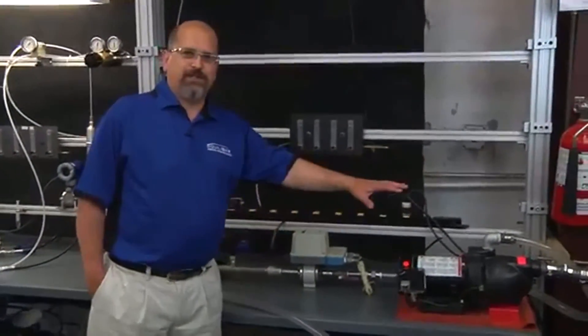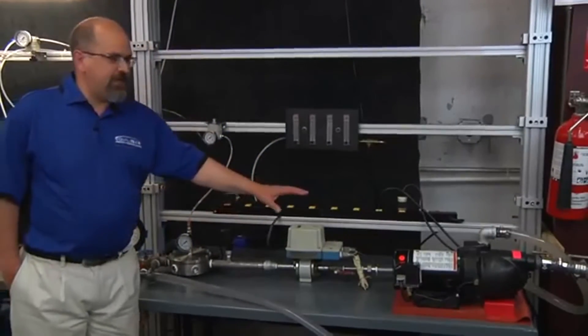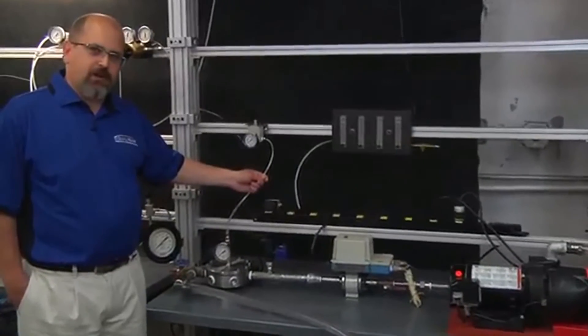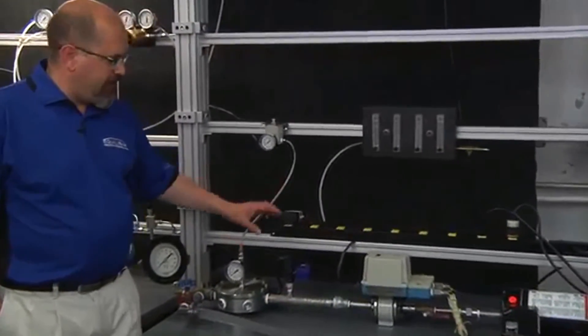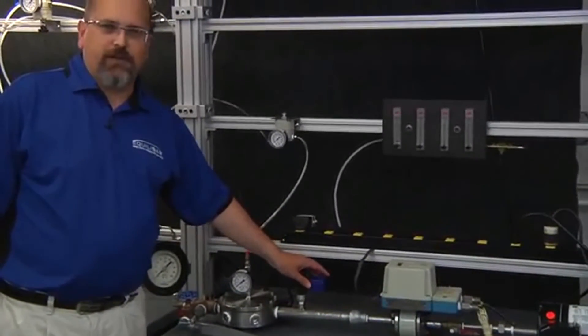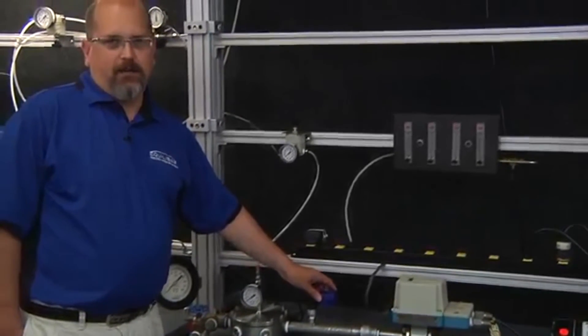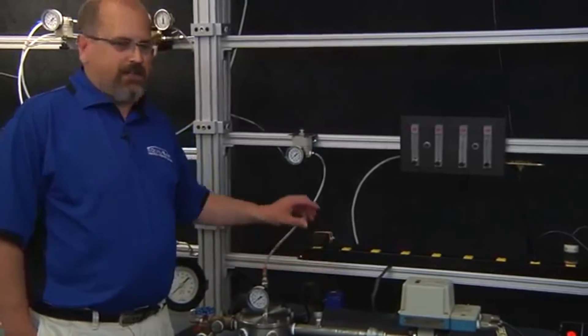We've now powered up the pump and we're flowing water through the system. To set the flow rate, I'm going to adjust the pilot pressure on the Equilibar Back Pressure Regulator. That's going to control the pressure on the output of the pump and it's going to let me set the pump on the flow curve until I get the desired flow.